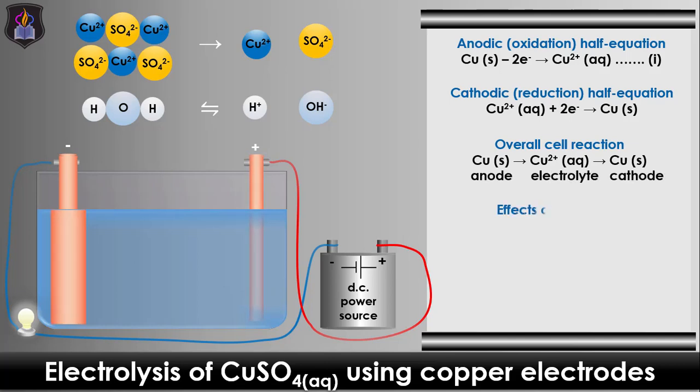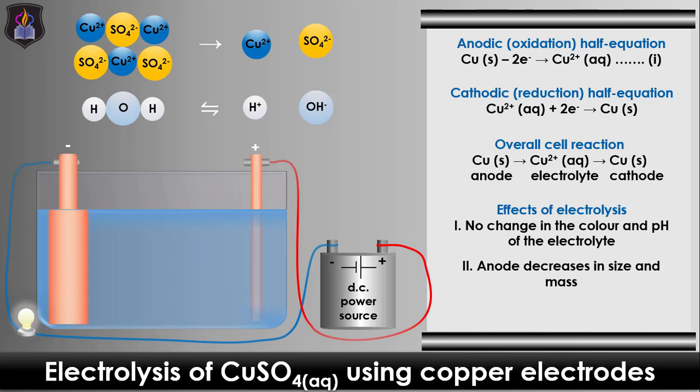At the end, there is no net change in the concentration and composition of ions present, so its color and pH remains the same. Also, the replacement of the copper(II) ions in the electrolyte by copper atoms from the anode causes the anode to decrease in size and mass,